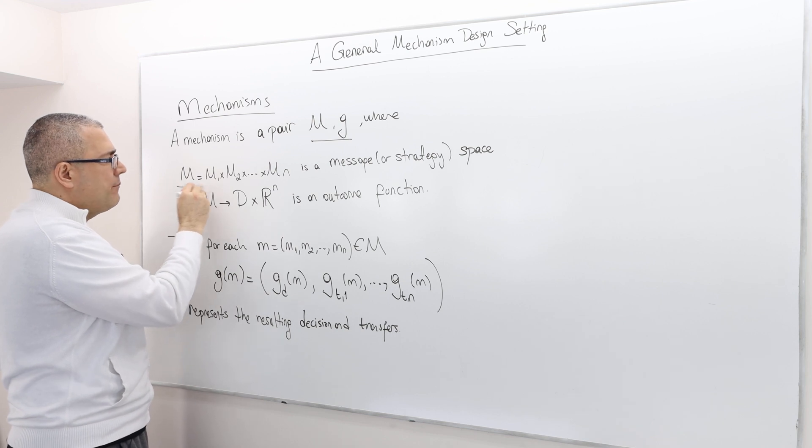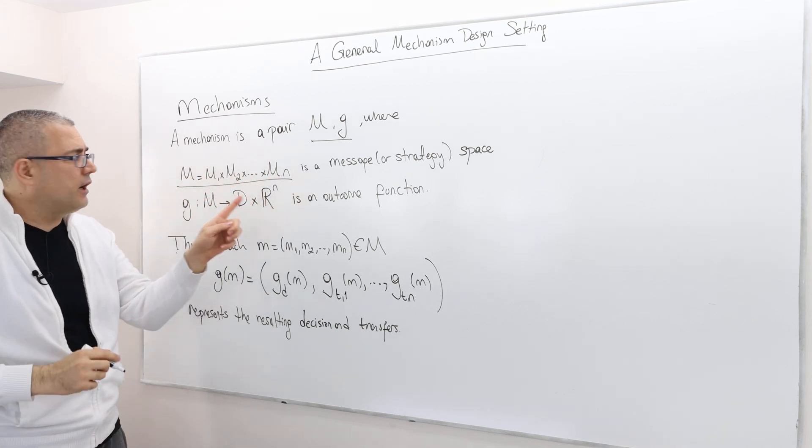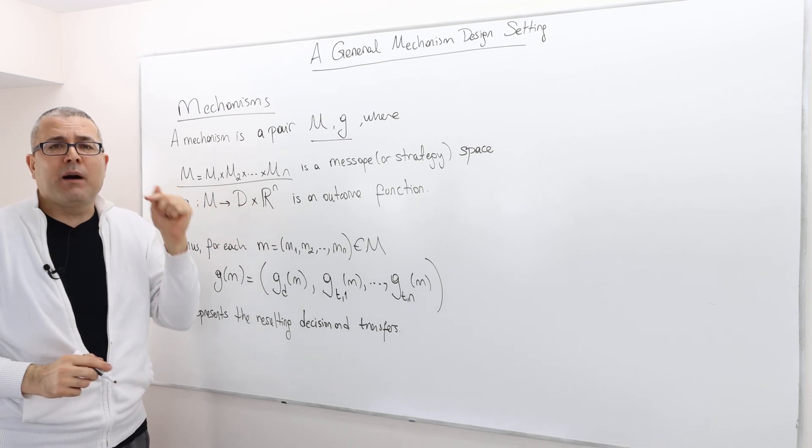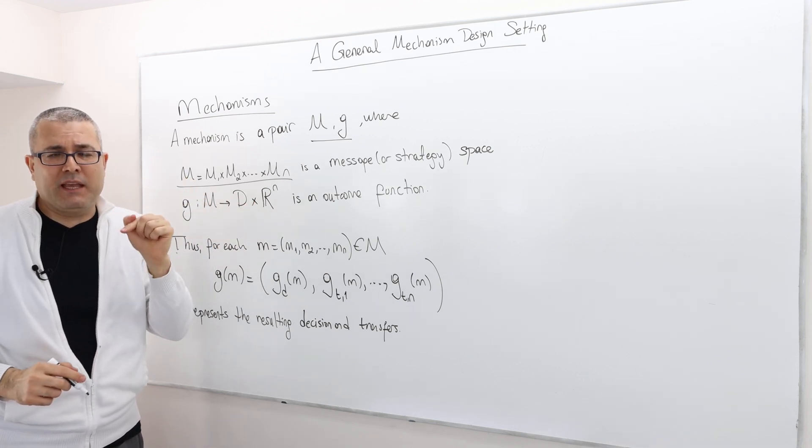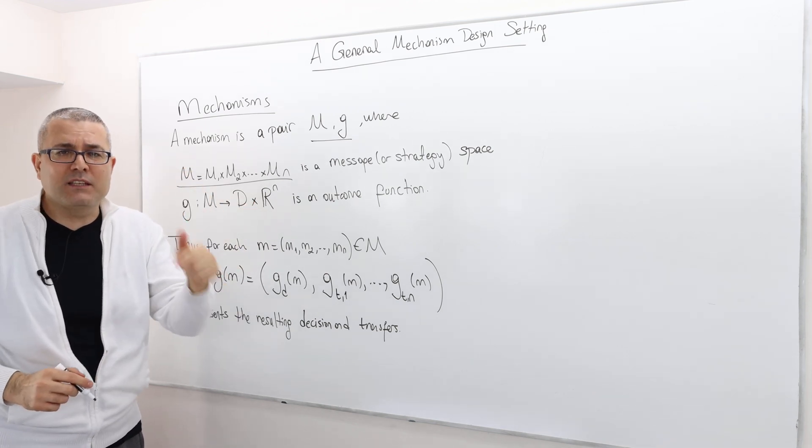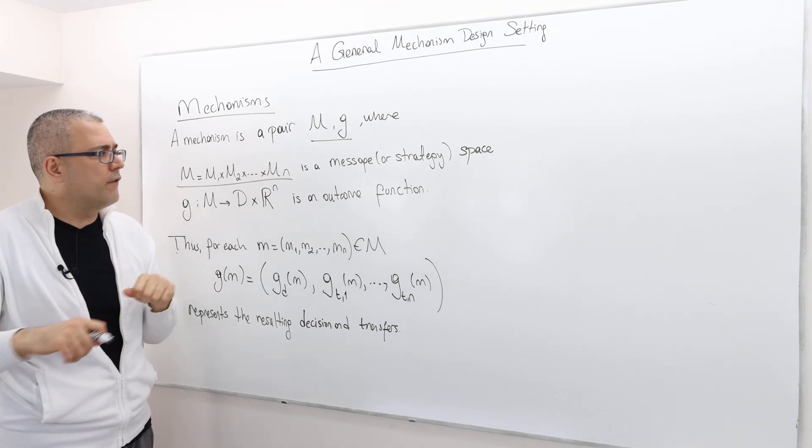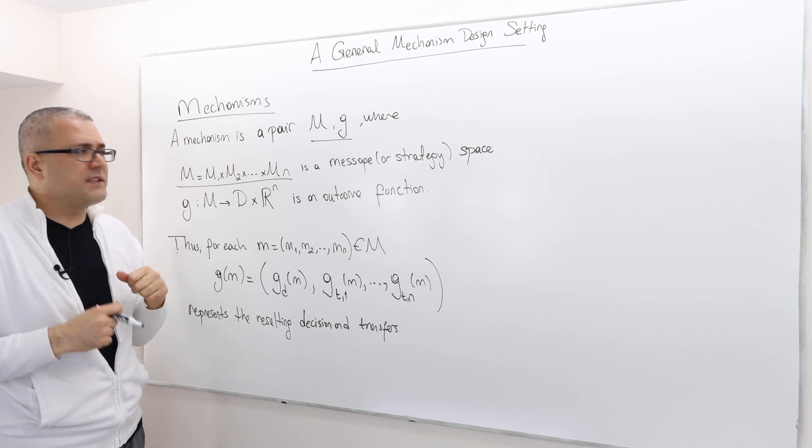Where M is a Cartesian product of M1, M2, all the way up to MN. What is each MI? It's the message space or strategy space of each individual. And so M is a Cartesian product of strategy space or message space.